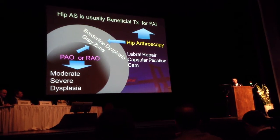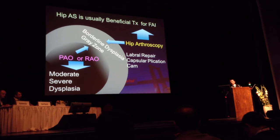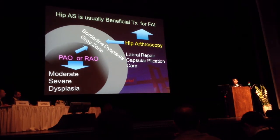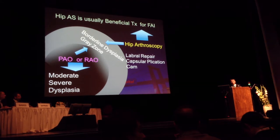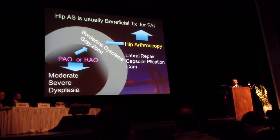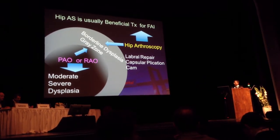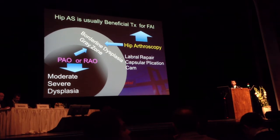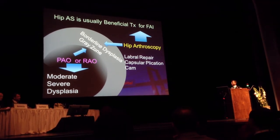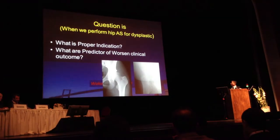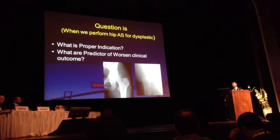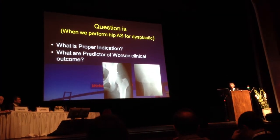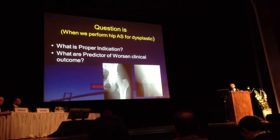These data indicate that isolated hip arthroscopy for labral repair in the presence of underlying hip dysplasia carries a higher risk of clinical failure. Hip arthroscopy is usually a beneficial treatment for mild dysplasia, and PAO and RAO osteotomy surgery is indicated for moderate and severe dysplasia. The borderline dysplasia remains a comparison between hip arthroscopy and osteotomy surgery. The question is: when do we perform hip arthroscopy for dysplasia?